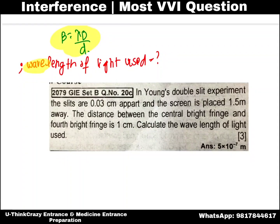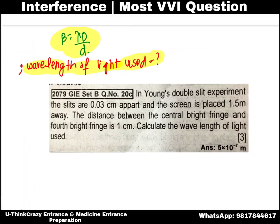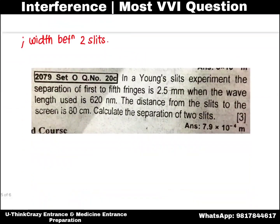There are three types of numericals. One type involves finding the wavelength of light. For example: the distance between the central bright fringe and the 4th bright fringe is 1 cm, with given values of d and D to find lambda. Another numerical gives a slit separation of 2.55 mm, wavelength of 620 nm, and a screen distance of 3 cm — apply the formula λD/d to solve.